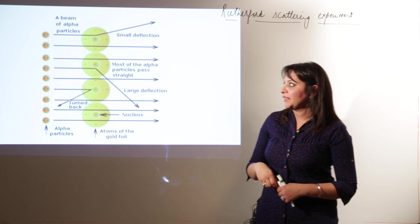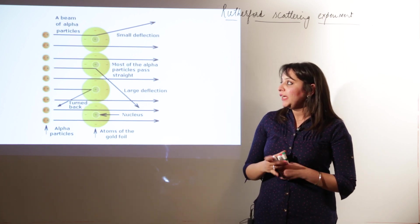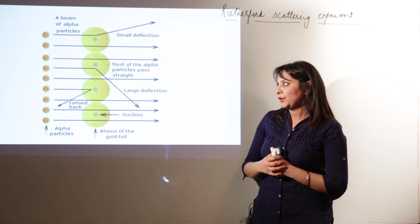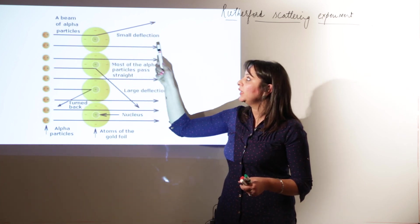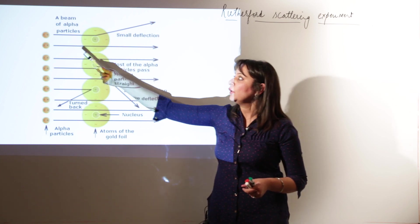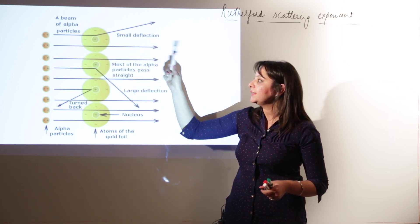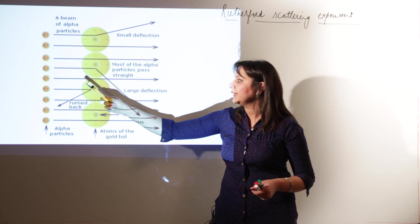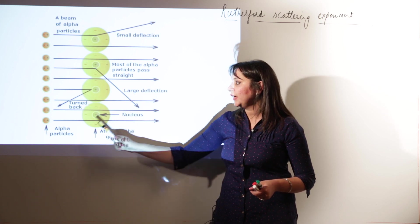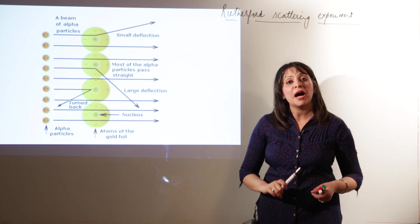So when he passed the rays, he saw the following observations. Few rays pass straight without any deflection. You can look in the first figure. These rays are passing straight. So maximum of the rays passed straight.